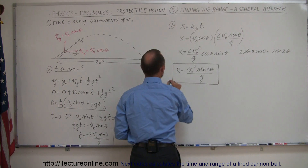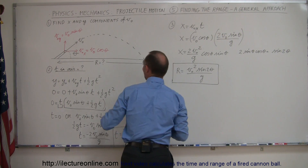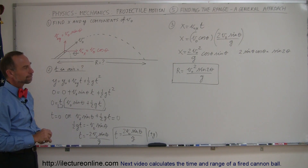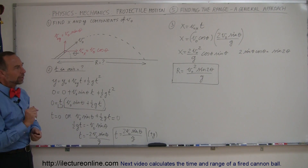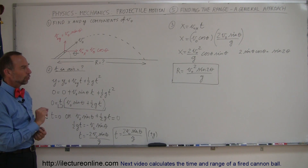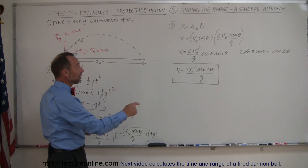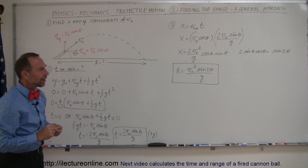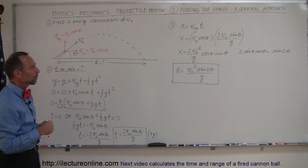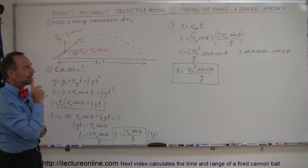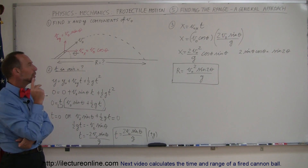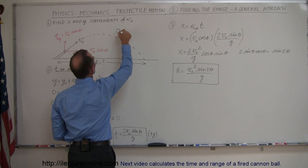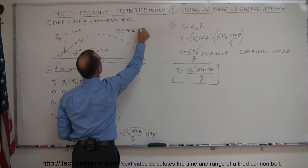Now let's take a quick look at that equation. The range only depends on the initial velocity and on the angle theta. What if we want to find the maximum range of a projectile? We look at the sine of 2 theta. We know that theta can vary from 0 to 90 degrees, so 0 is less than or equal to theta, which is less than or equal to 90 degrees.